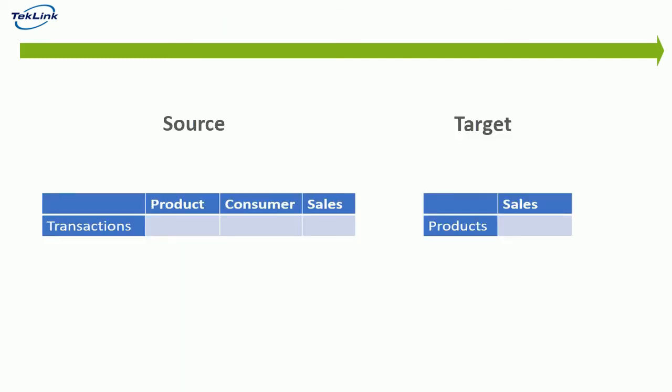This is the difference in dimensionality between our original and our end target. Our source has two dimensions — transactions and line items — where our target has products and line items. However, they do share a list. Because the line item products in our source is the same list that we would use as a dimension in our target table, we are able to link them together.